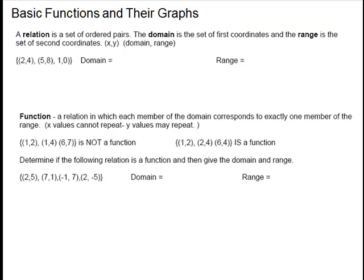So first they give us a set of ordered pairs, a relation, and they ask us for the domain. We want all the x coordinates, so we want 2, 5, and 1. The range will be the y coordinates, so 4, 8, and 0. We usually put these in numerical order, but it doesn't really matter.